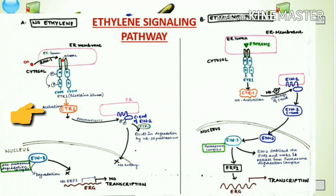The full form of CTR1 is Constitutive Triple Response 1. This protein is activated by phosphorylation performed by the histidine kinase domain of the ETR1 receptor. After the activation of CTR1 through this phosphorylation event, CTR1 goes on to phosphorylate the EIN2 cytoplasmic domain.